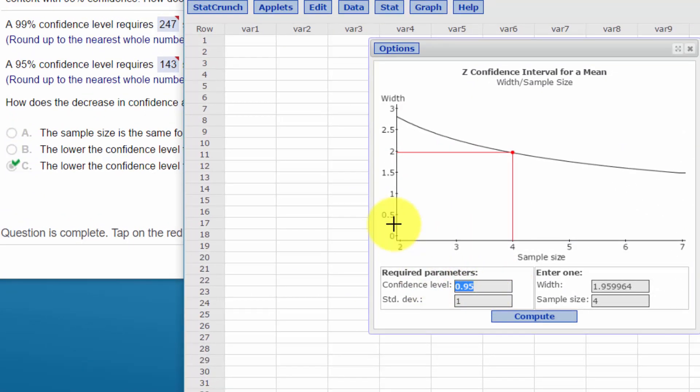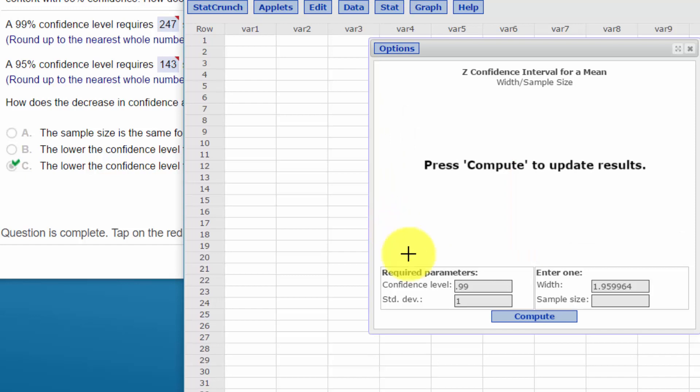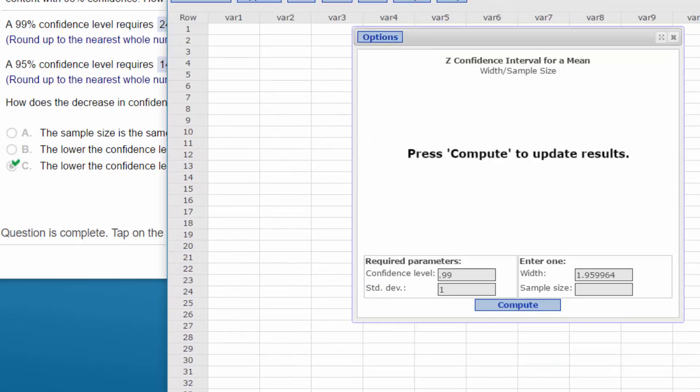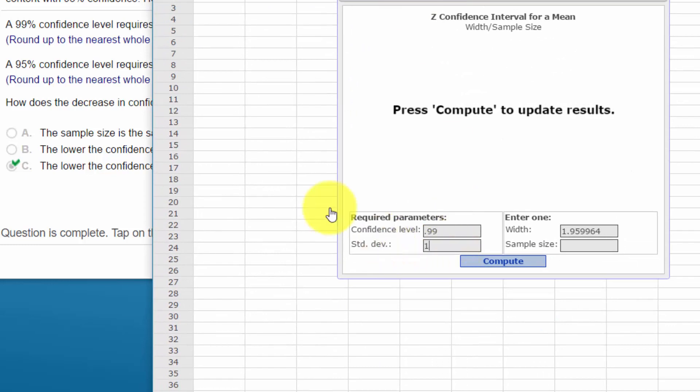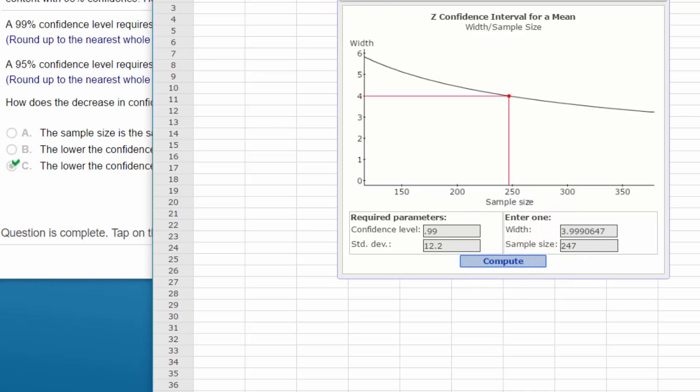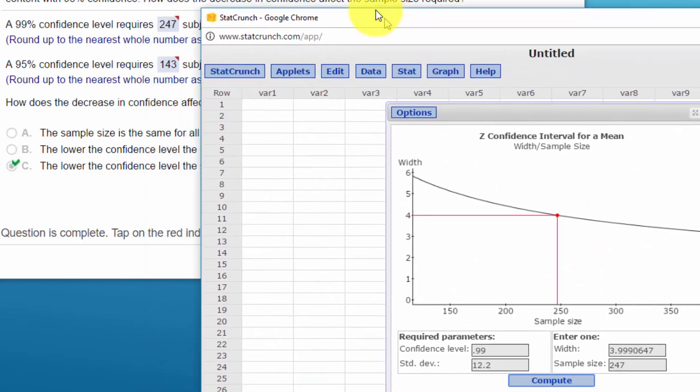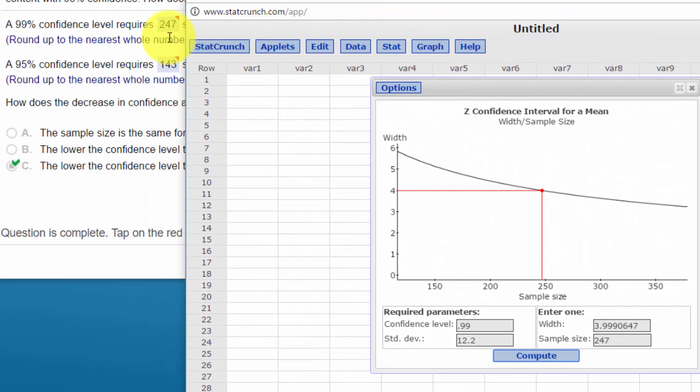The first question is for the 99% confidence interval. So I'm going to put 0.99 in our standard deviation, I think was 12.2. Our width is twice that margin of error, which would be two times two would be four. And we click on compute for sample size of 247. And that is what they want us to come up with for the 99%.